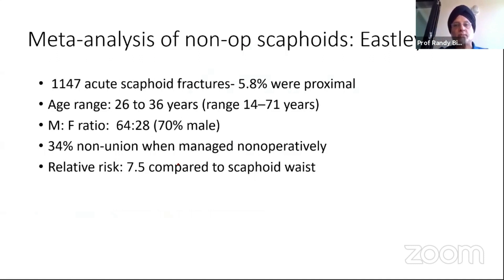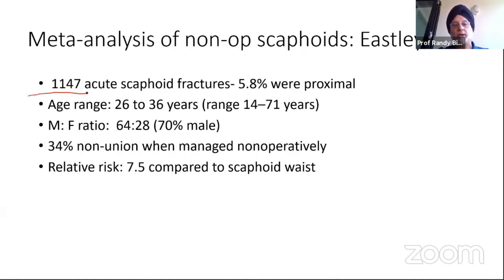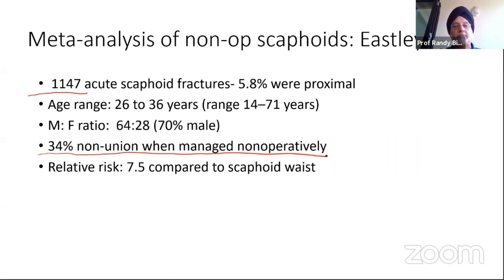This paper from Joe Dias' group looked at a meta-analysis of scaphoids treated non-operatively. Of the 1,147 published in literature, only 5% were proximal pole. So it's important to remember, a proximal pole is not a common problem — only about 6% to 10% of cases. What they found was a 34% non-union rate when managed non-operatively. According to this paper, your relative risk of non-union compared to a scaphoid waist fracture is 7.5 times higher with a proximal pole.